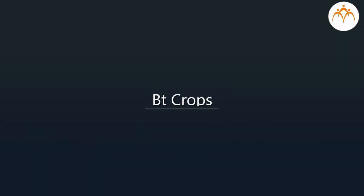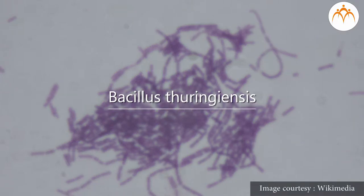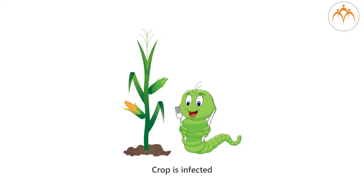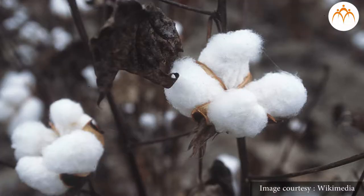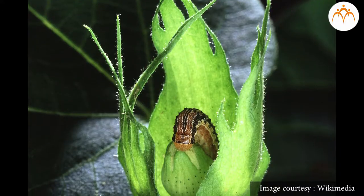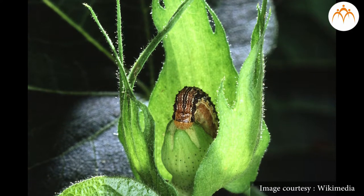BT Crops: The prefix BT stands for Bacillus thuringiensis. This is the name of a bacterium which is responsible for causing disease and killing caterpillars of many insect pests that eat and harm standing crop plants in the field. This bacterium has a gene responsible for producing a toxin termed as BT toxin, which kills the pests. Using the techniques of recombinant DNA technology, this gene has been transferred to a variety of crop plants like cotton, brinjal, corn, potatoes, etc. These transgenic plants containing the gene for BT toxin produce the toxin, and when pests like bollworm feed on the plant, the pests die because of the BT toxin.